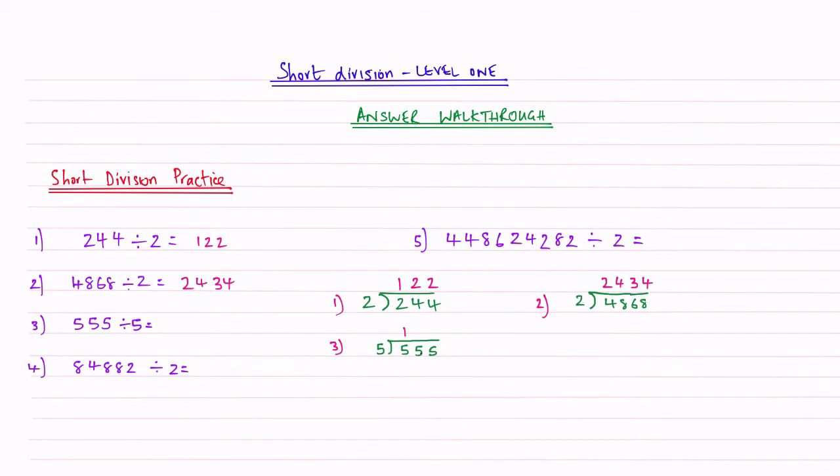How many 5's going to 5? 1. Second digit, how many 5's going to this 5? It's 1. And how many 5's going to this 3rd 5? The answer is 1. My answer there is 111.